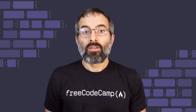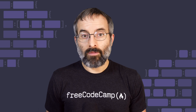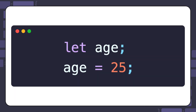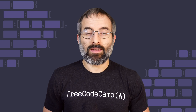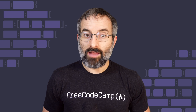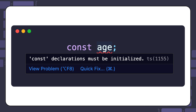You can declare a let variable without immediately assigning it a value, and assign it a value later. Variables declared with const, however, must be assigned a value at the time of declaration. If you try to declare a const variable without assigning it a value, you'll get an error.